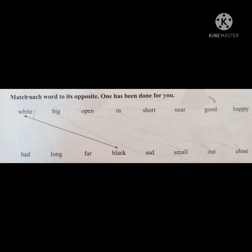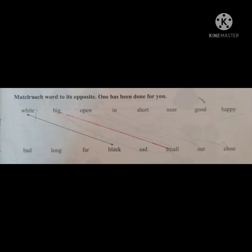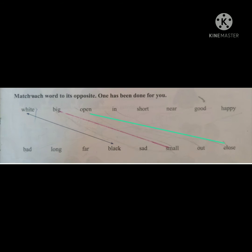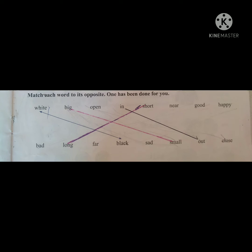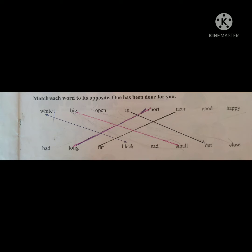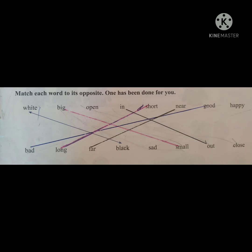Match each word to its opposite. One has been done for you. White — black. Big — small. Open — close. White — black. In — out. Short — long. Near — far. Good — bad. Happy — sad.